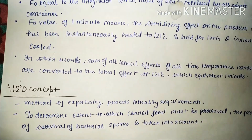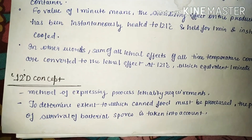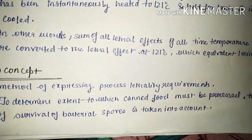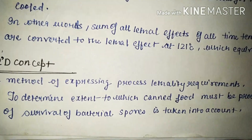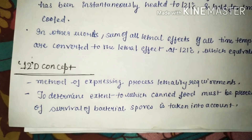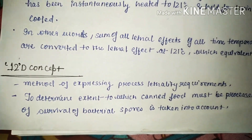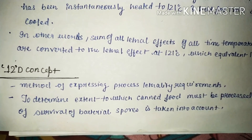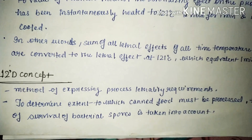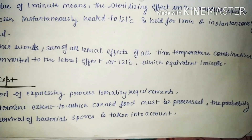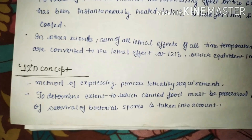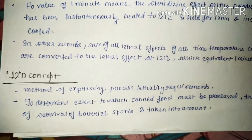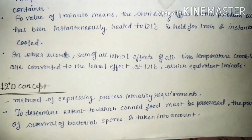Moving further to the 12D concept. The 12D concept is a method of expressing process lethality requirement to determine the extent to which canned food must be processed. The probability of survival of a bacterial spore is taken into account.